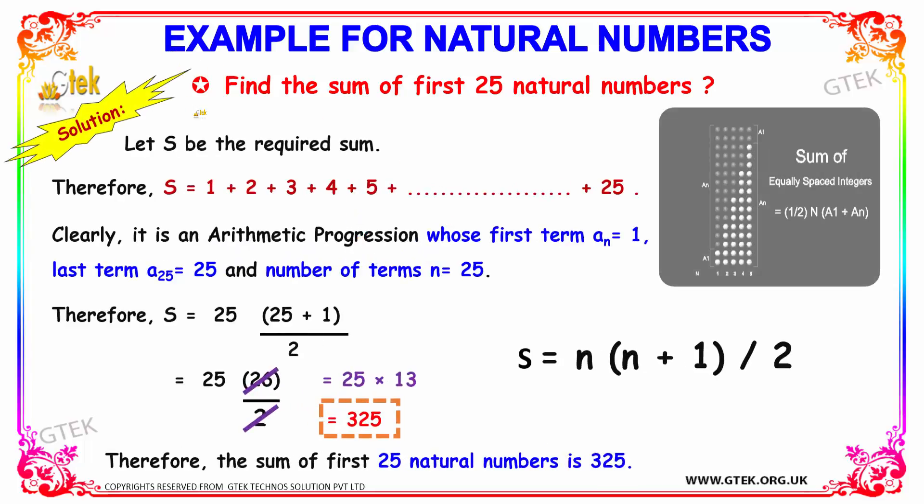The first thing which we need to consider is that, since in the equation we have the sum of first 25 natural numbers which needs to be found out, let's consider S, which is the required sum.